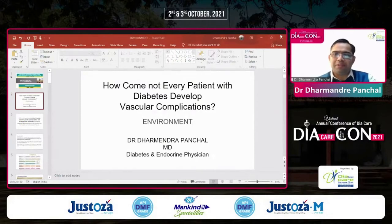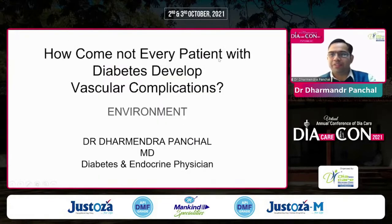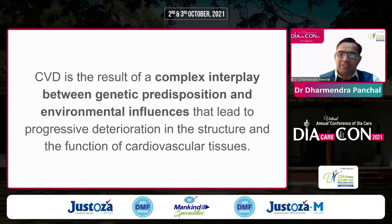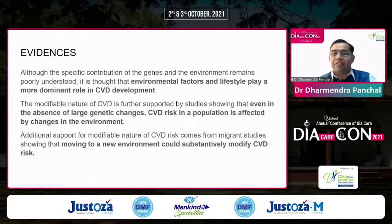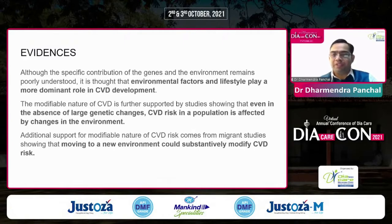After Dr. Anjali's excellent deliberation, we know that how come not every patient with diabetes develops vascular complications — genes may be responsible, but they are not the only factor. We always say it is a complex interplay between genetic predisposition and environmental influence that leads to progressive deterioration in the structure and function of cardiovascular tissue. There is much evidence that environmental factors and lifestyle both play a major dominant role in cardiovascular disease development.